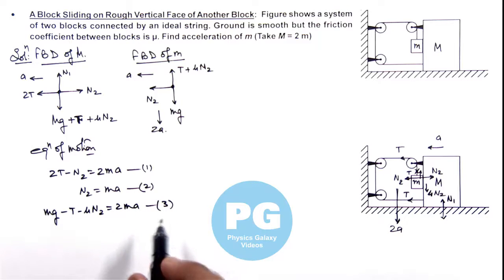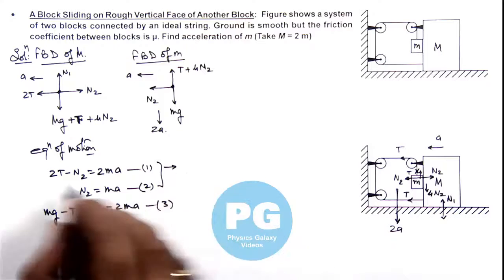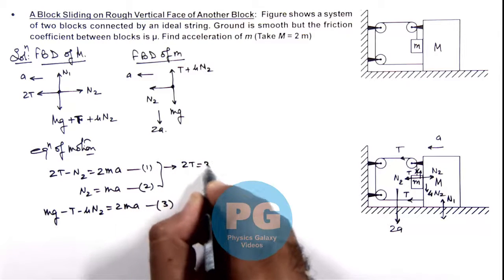And here, from equations 1 and 2 you can directly see we are getting the value of 2T is equal to 3m ay.